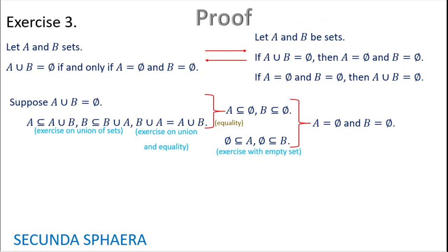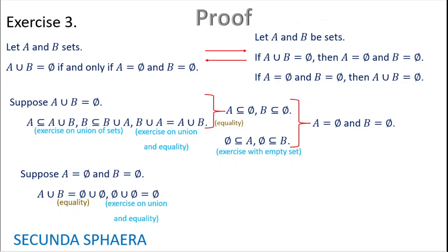For the second part, suppose that A equals the empty set and B equals the empty set. Using the property of equality and substituting in the union, A∪B equals the empty set union the empty set. By an exercise on union, the empty set union the empty set equals the empty set. So A∪B is equal to the empty set, which concludes the second part and the entire proof.